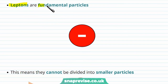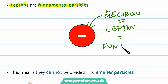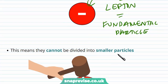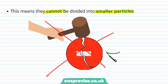Leptons are fundamental particles. This means they cannot be divided into smaller particles — a lepton can't be broken up into smaller particles. Leptons aren't made up of further particles; they make up other particles themselves. A fundamental particle is a particle that can't be split up into smaller particles.